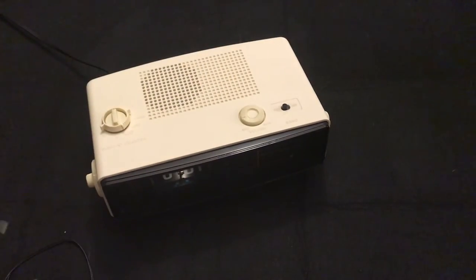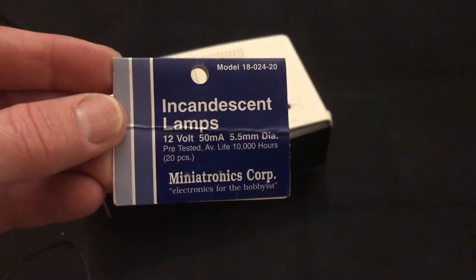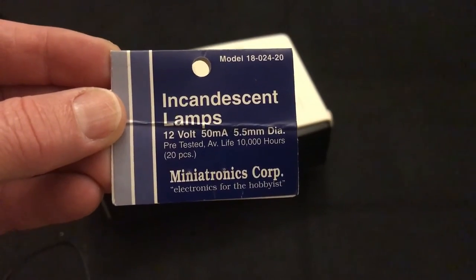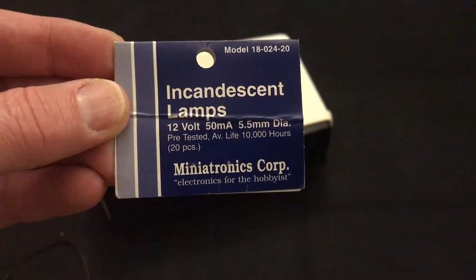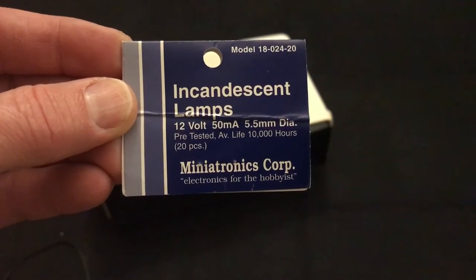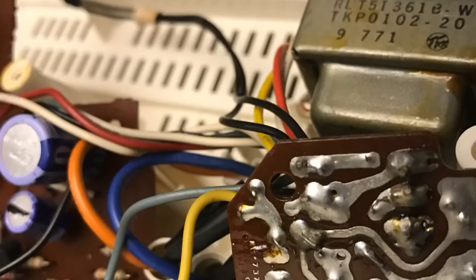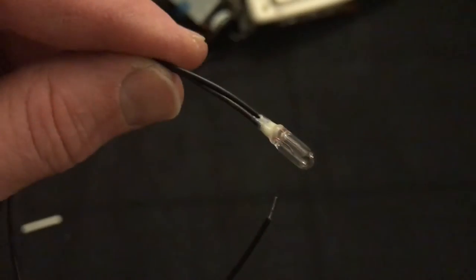This, I believe, is the exact replacement. It looks exactly the same. It is an incandescent bulb, 12 volt, 50 milliamp, 5.5 millimeter in diameter, model 18-024-20. If you're using miniatronics, you solder it into the circuit board that's located on the clock mechanism.